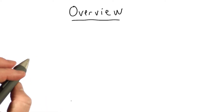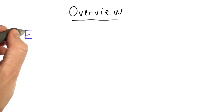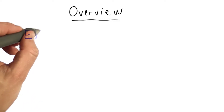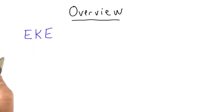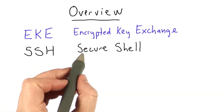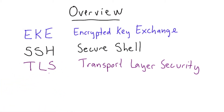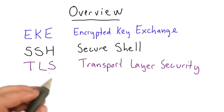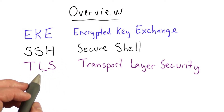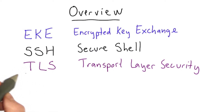What we're going to do the rest of this unit is look at three particular protocols. We're going to look at the encrypted key exchange protocol. We're going to look at SSH for setting up a secure shell. And we'll look at TLS, which is the most widely used cryptographic protocol today — the protocol used every time someone connects to a secure website using HTTPS.